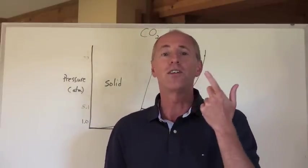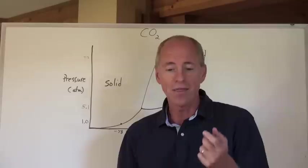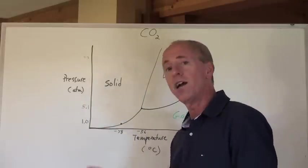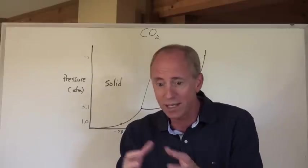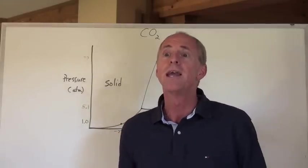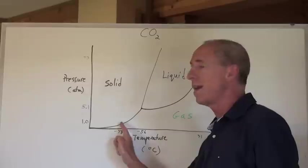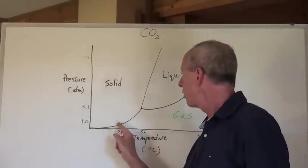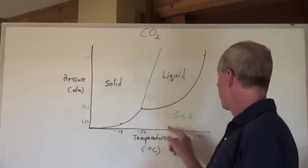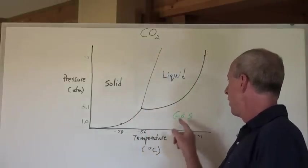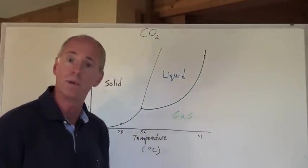This is what we know as dry ice — solid carbon dioxide. Dry ice must be kept well below minus 78 degrees Celsius to remain solid. If you take it out at room temperature at one atmosphere of pressure, it starts to warm up, and once it hits minus 78 degrees Celsius, it undergoes sublimation and goes from a solid directly to a gas, remaining a gas all the way up to room temperature around 25 degrees Celsius. CO₂ at room temperature and one atmosphere is a gas.